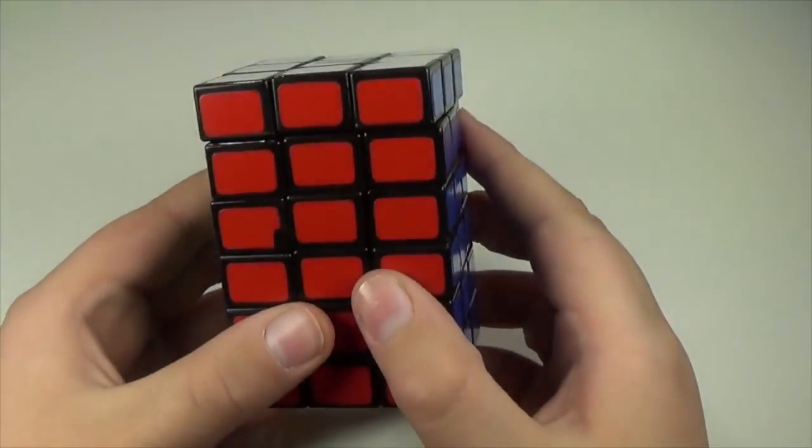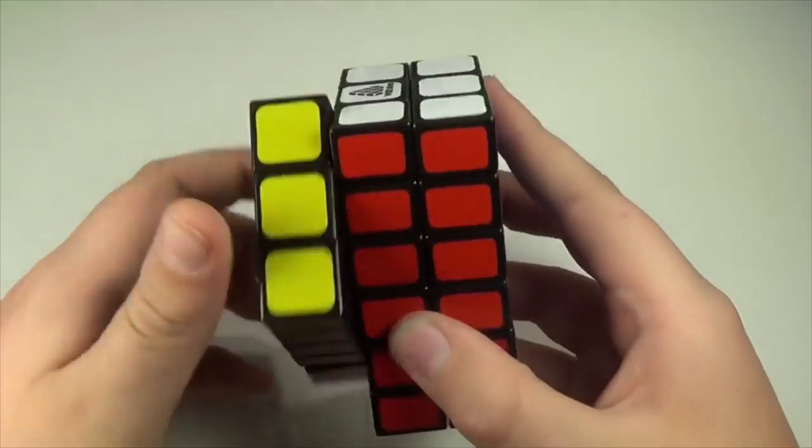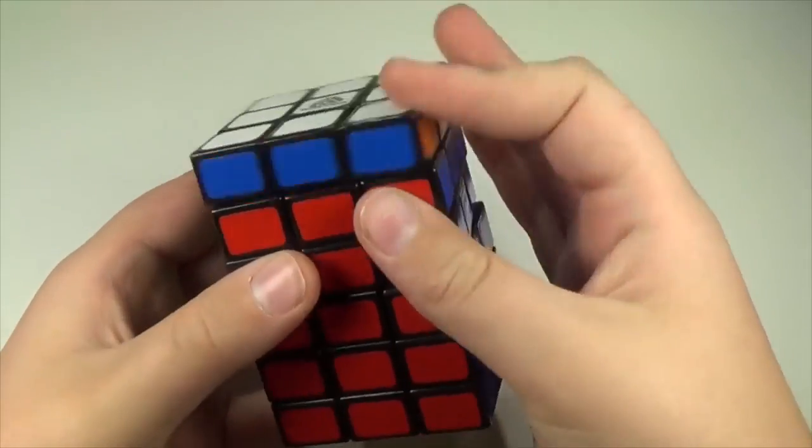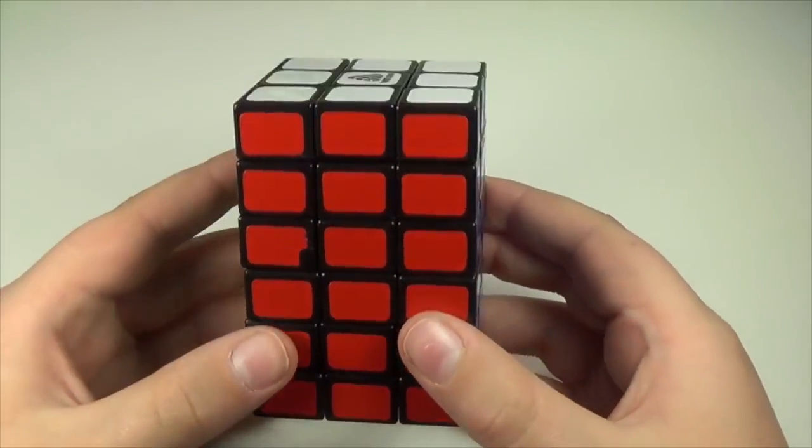Next, we have the Wit Eden 3x3x6. I needed to get this to complete my 3x3xN collection, and it's really nice. The turning is really smooth, and it's really fun to solve. I don't really mind these squish layers, but I would have preferred it to be proportional.